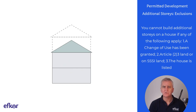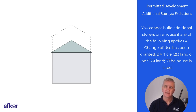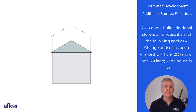Starting with exclusions. You cannot build additional stories on a house if any of the following exclusions apply. A change of use has been granted. The house is on Article 23 land or on SSSI land. The house is listed.